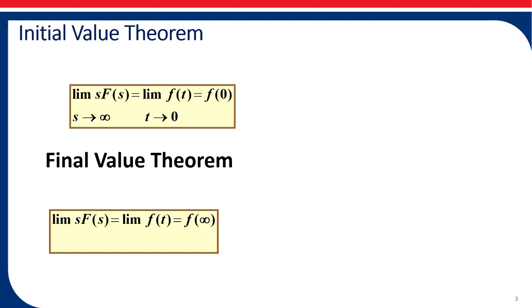The initial value theorem states that the initial value of f(t) — meaning the limit of f(t) as t tends to 0 — is given by the limit of s·F(s) as s tends to infinity. So the initial value of f(t) can be directly found from the Laplace transform F(s) by multiplying by s and then letting s tend to infinity.